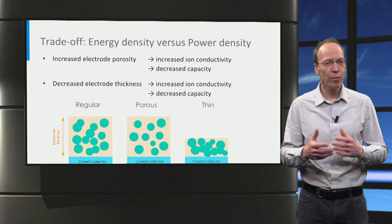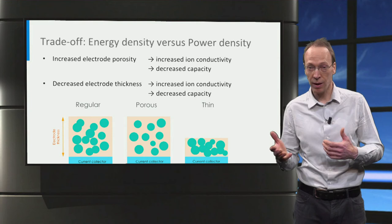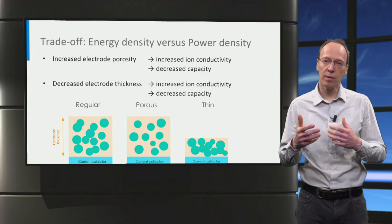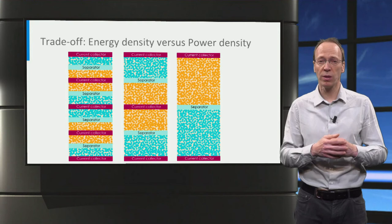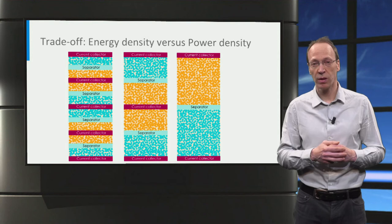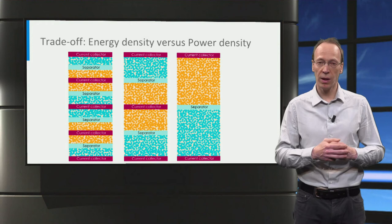Effectively, both strategies will increase the power density, leading to a shorter charging time, but at the expense of the energy density, demonstrating the typical trade-off between power density and energy density. As a consequence, a lithium-ion battery designed for high power density will have thinner electrodes compared to one designed for high energy density. On the left we see a high power density design, and on the right a high energy density battery.